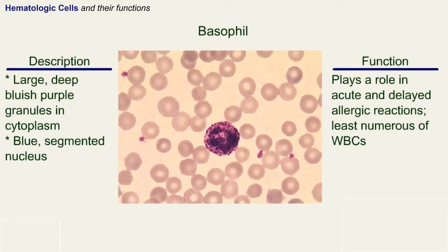Basophil: a white blood cell with large, deep, bluish-purple granules in the cytoplasm and a blue segmented nucleus. Basophil plays a role in acute and delayed allergic reactions and is the least numerous of the white blood cells.